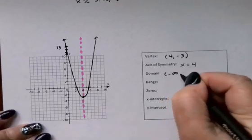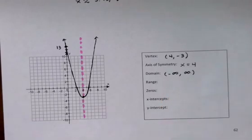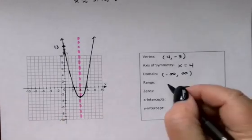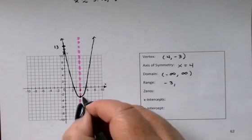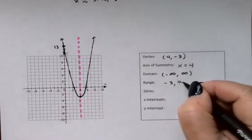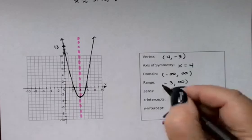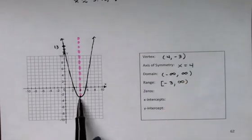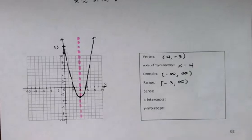Domain: all real numbers, -∞ to ∞. In the range, it looks like the smallest y value on this graph would be right here at the vertex. So the smallest y value is -3, and then the y's go up forever, so up to infinity. I will use a bracket on the -3. That -3 is included. The graph actually hits that y value of -3.